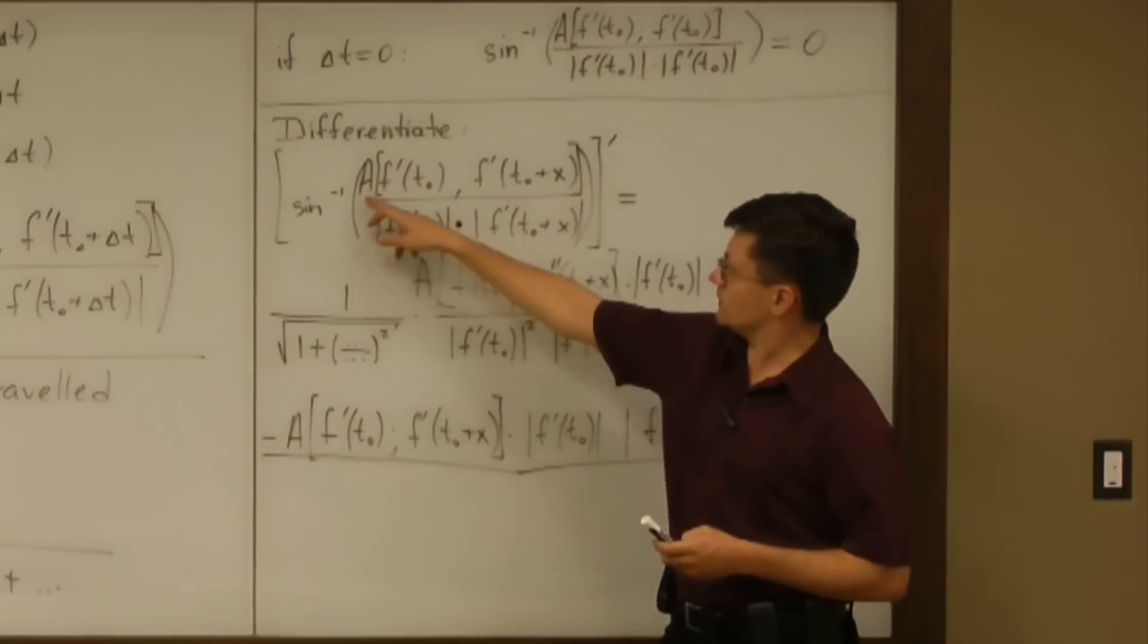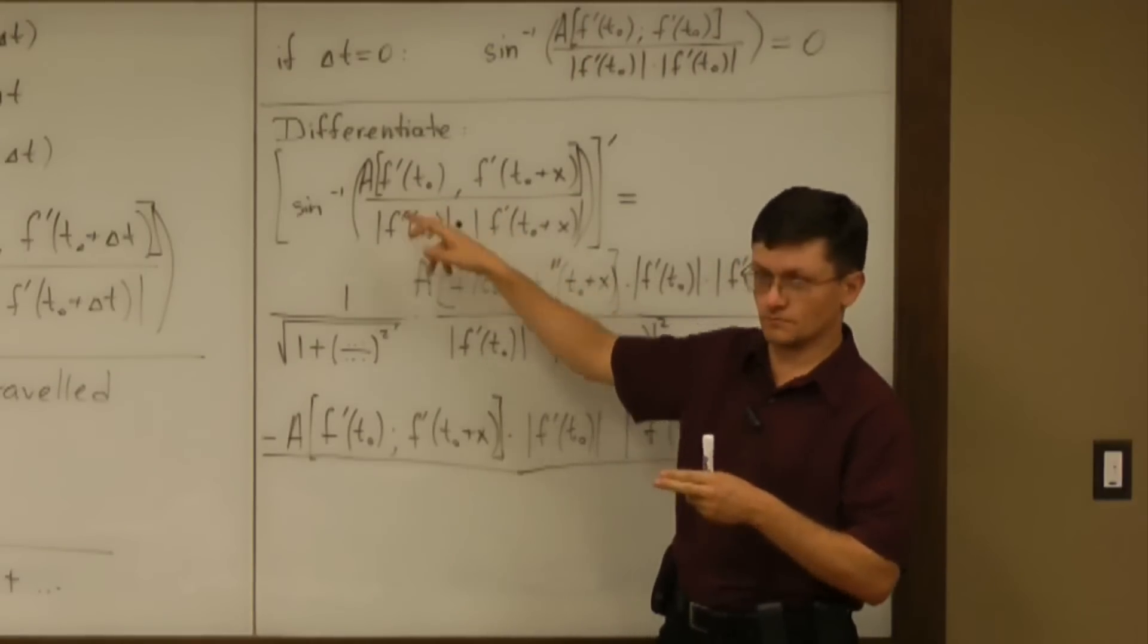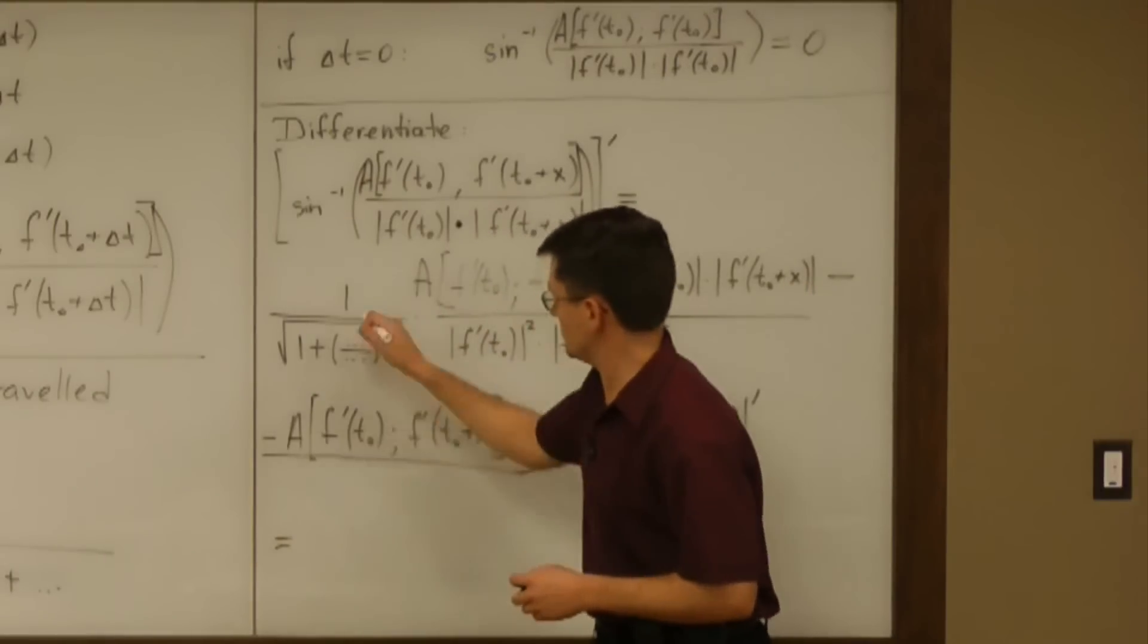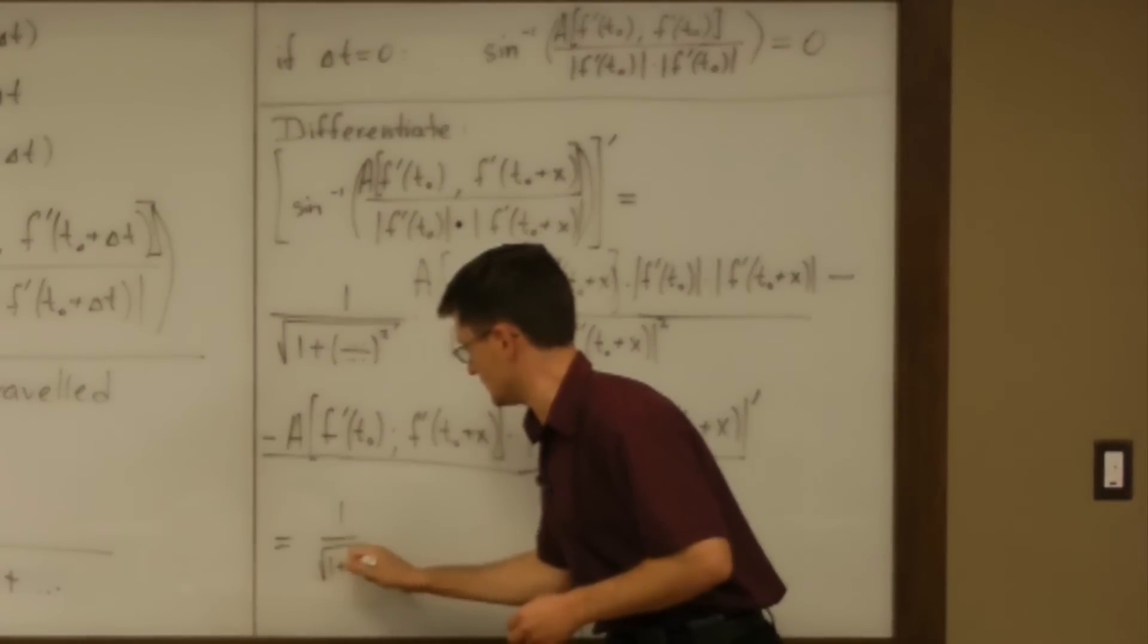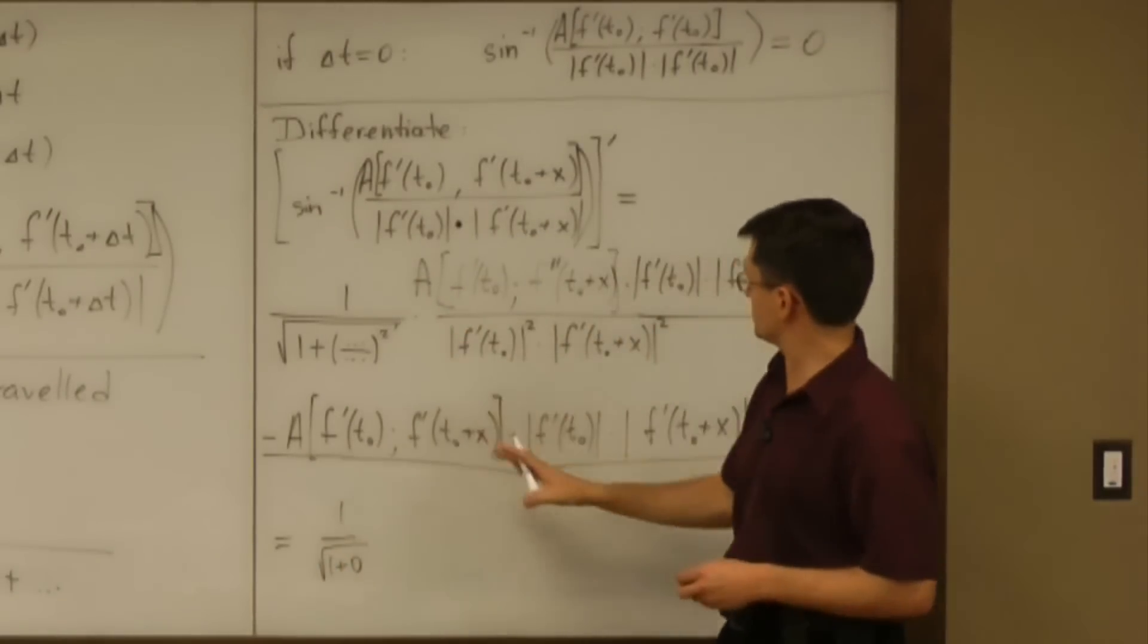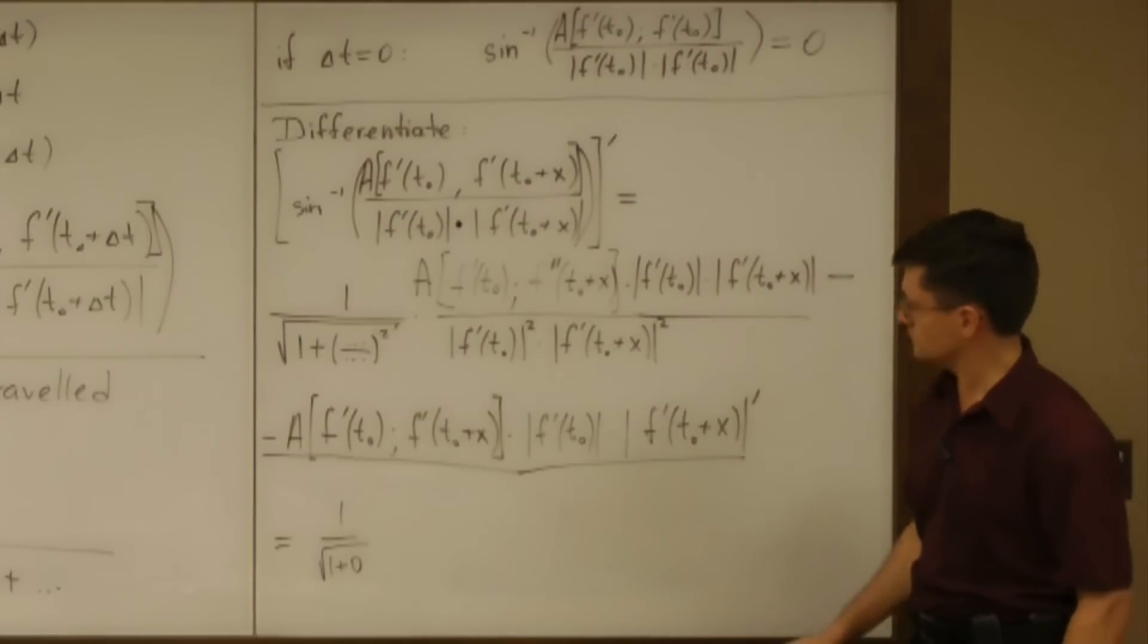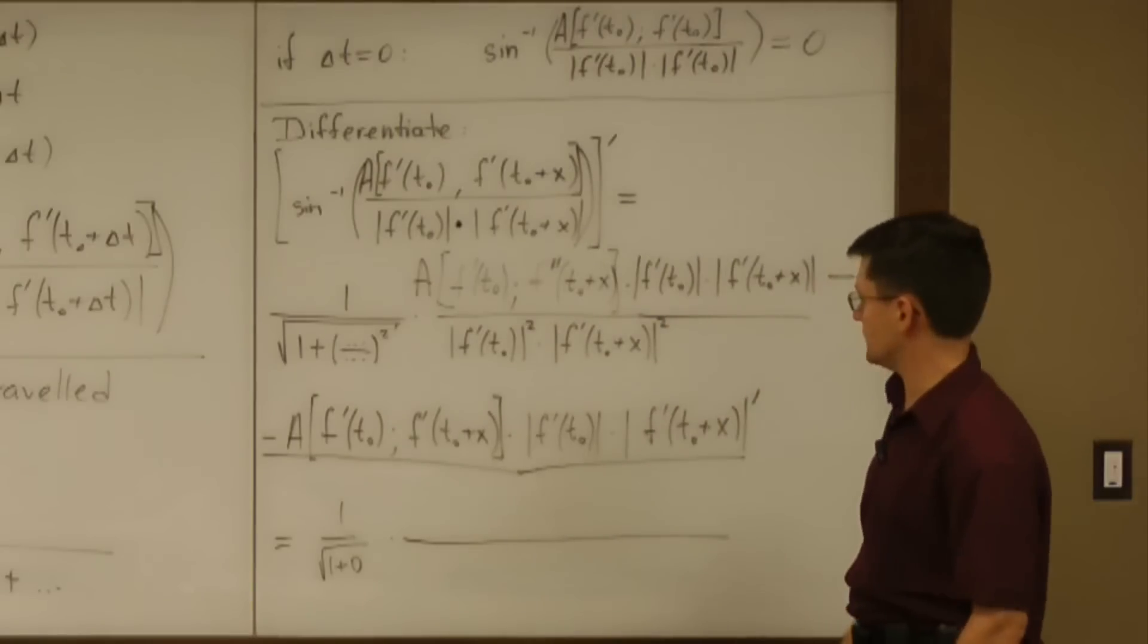What's that going to be? We just did it, right? Area on two vectors being the same is zero. So that is zero. So the whole thing is one over square root of one plus zero, which is one. And then what do we have here? A big fraction.